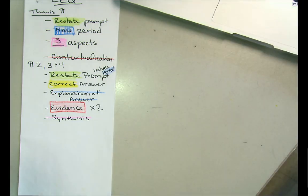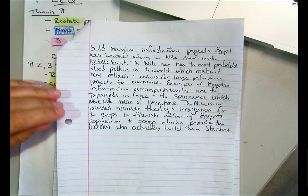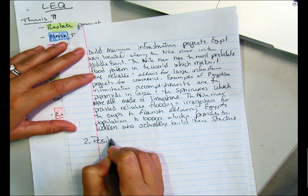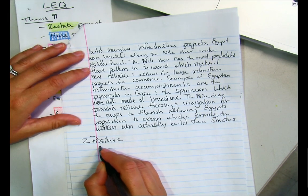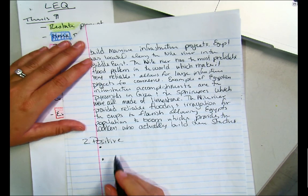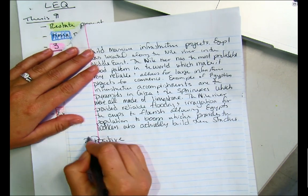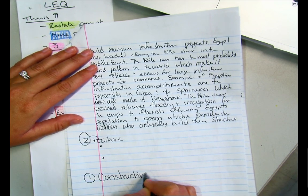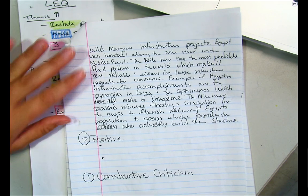What we're going to do — and we haven't done this yet — at the bottom of their third paragraph, after the third content paragraph, you are going to write two positive things about their essay and then one piece of constructive criticism. Do not start writing yet.